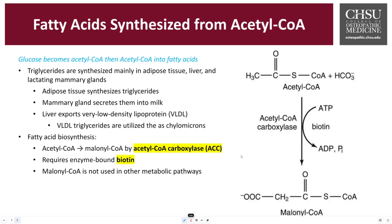Fatty acid synthesis begins from acetyl-CoA. Glucose is converted into acetyl-CoA, which serves as a precursor for fatty acid synthesis. This conversion occurs through glycolysis producing pyruvate, which is further processed into acetyl-CoA. Once acetyl-CoA is formed, it can enter the fatty acid synthesis pathway and be transformed into different kinds of fatty acids. Triglycerides, the dominant storage form of fats, are synthesized in adipose tissue, the liver, and lactating mammary glands.